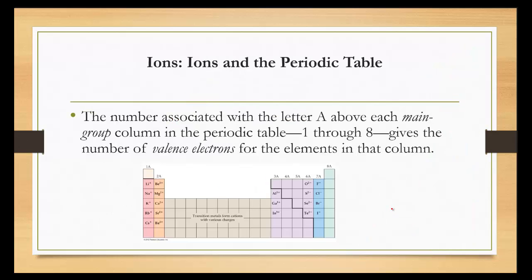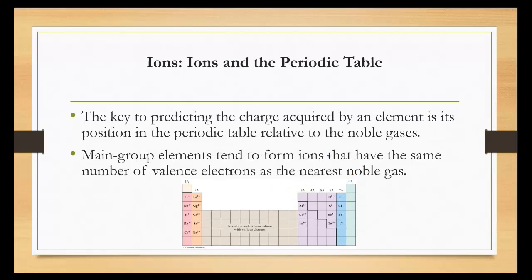The number associated with the letter A above the main group column of the periodic table — one through eight — gives the number of valence electrons in the elements in that column. Remember, the valence electrons are the outermost electrons; they're the ones actually participating in reactions. The key to predicting the charge acquired by an element is its position on the periodic table relative to the noble gases — how far away it is.